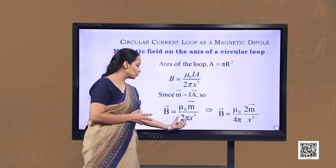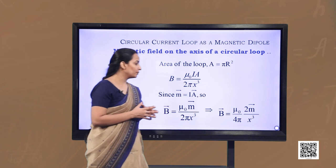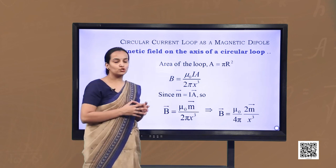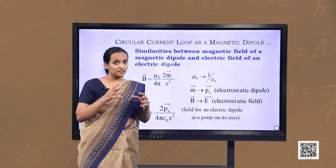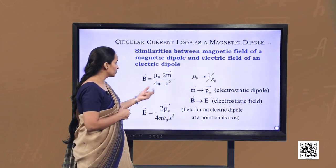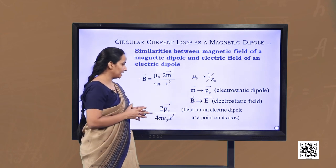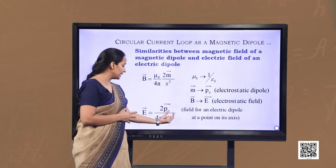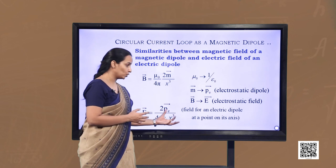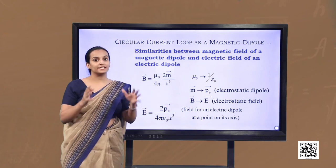Since m = i·A, we can replace i·A with the magnetic moment and write B = μ₀·m / 2πx³, and on multiplying and dividing by 2, we have B = (μ₀/4π) · (2m/x³). Recalling the expression for the electric field of an electric dipole, the similarity is seen by substituting μ₀ → 1/ε₀ and m → pₑ: E = 2pₑ / (4πε₀x³), which is the field of an electric dipole on its axis.